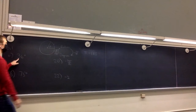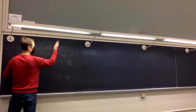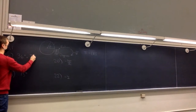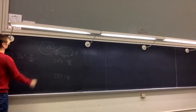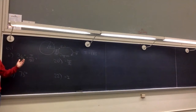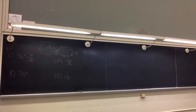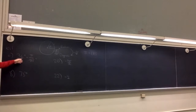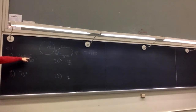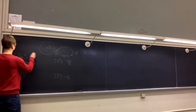36 degrees: we want to go to radians, so we multiply by π over 180. And that's your answer — you can simplify it. Dividing both top and bottom by 18 gives 2 over 10, so π over 5. It's really that easy.